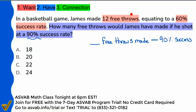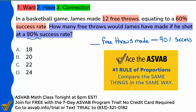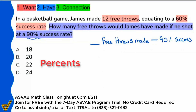Free throws made, success rate, how many free throws, success rate. This is a proportion word problem, where we are comparing the same things in the same way. You can still treat this like a percent problem, but I'm going to choose to solve this like a proportion, because I want more people to understand that percents and proportions are the same idea.